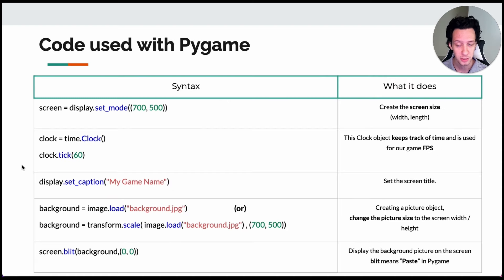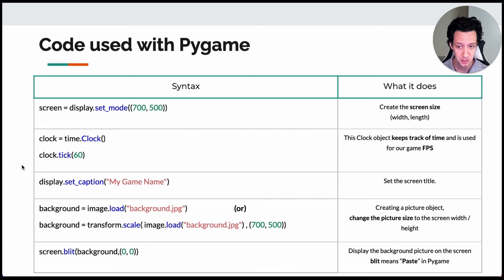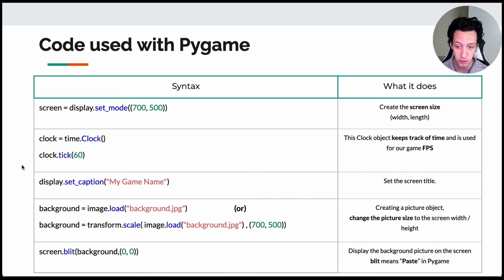Here are different event types in Pygame and different keys you can program. Any key on the keyboard can be programmed to do something. Arrow keys should be fully capitalized. For letter keys, the K prefix is capitalized but the letter itself is lowercase. You can also use numbers. I've included a document of all the Pygame methods and functions I'll be using in the games attached to this lesson.